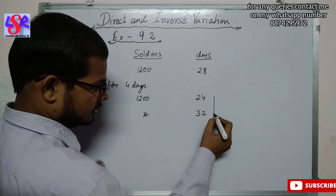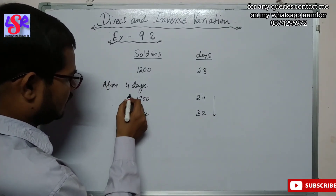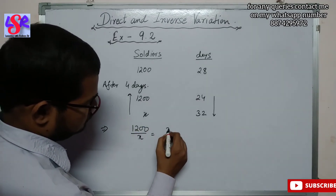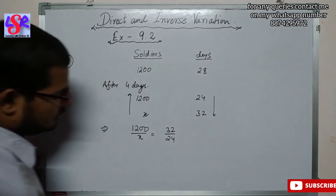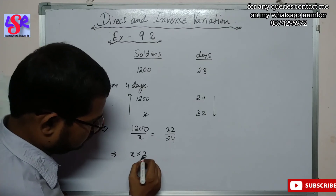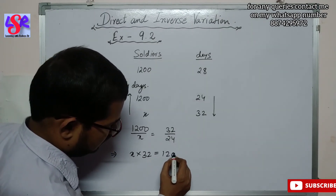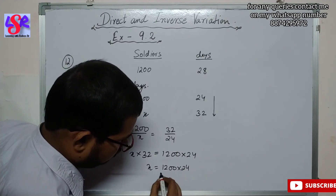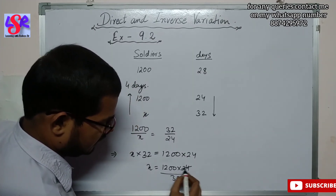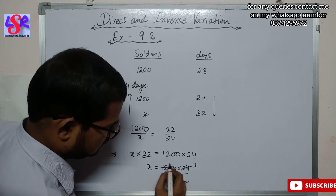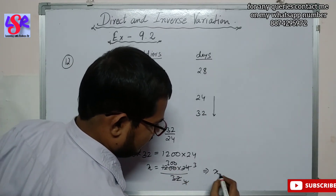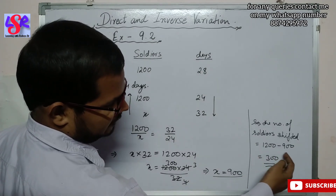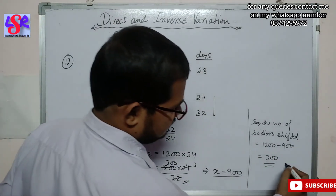We put the arrow in the downward direction for soldiers, so the days arrow is upward. The equation is: 1200 / x = 32 / 24. Cross-multiplying: 32x = 1200 × 24. So x = (1200 × 24) / 32 = 900. Therefore the number of soldiers shifted = 1200 − 900 = 300 as the required answer.